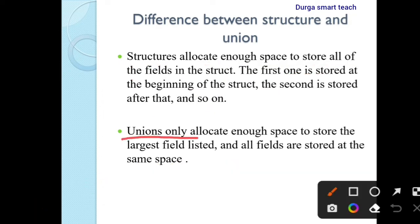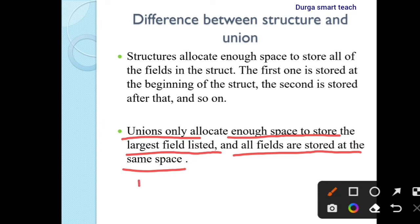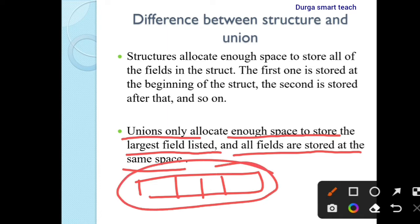But union only allocates enough space to store the largest field listed, and all fields are stored at the same memory space. The largest memory space is allocated, and all variables are stored one after another in that same location. If you want to store the second value, the first value is replaced with the second value. The main purpose of union is to save memory.